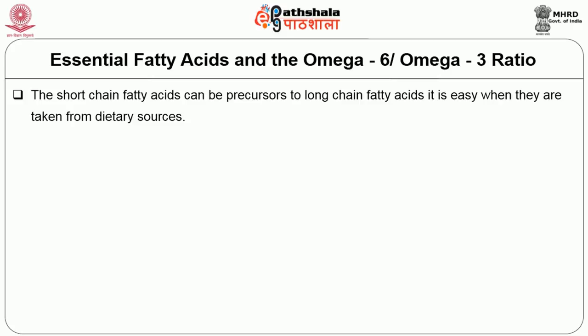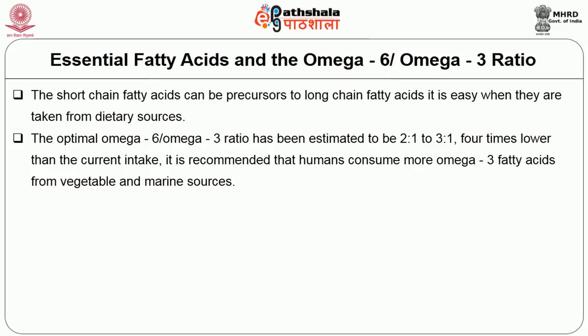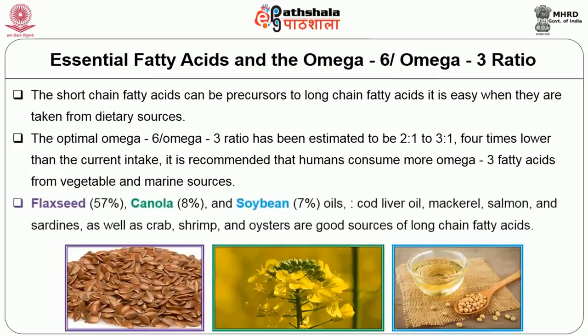The optimal omega 6 to omega 3 ratio has been estimated to be 2:1 to 3:1, which is four times lower than the current intake. It is therefore recommended that humans consume more omega 3 fatty acids from vegetable and marine sources. Flaxseed contains 57%, canola 8%, and soybean 7% of omega 3 fatty acids. Cod liver oil, mackerel, salmon, sardines, crab, and oysters are good sources of long-chain omega 3 fatty acids.